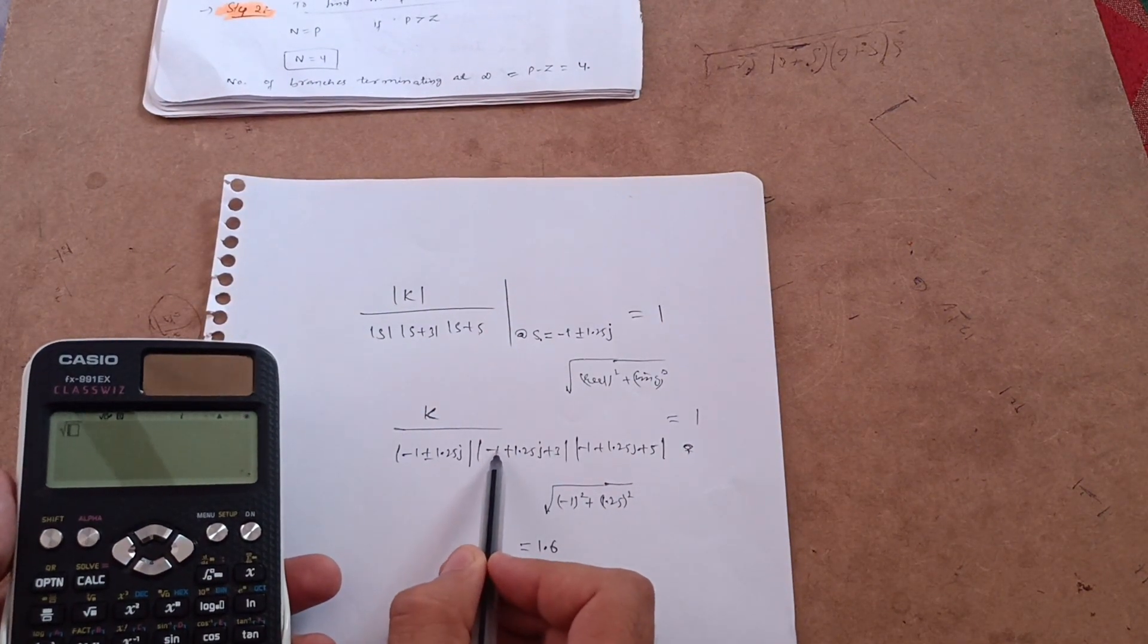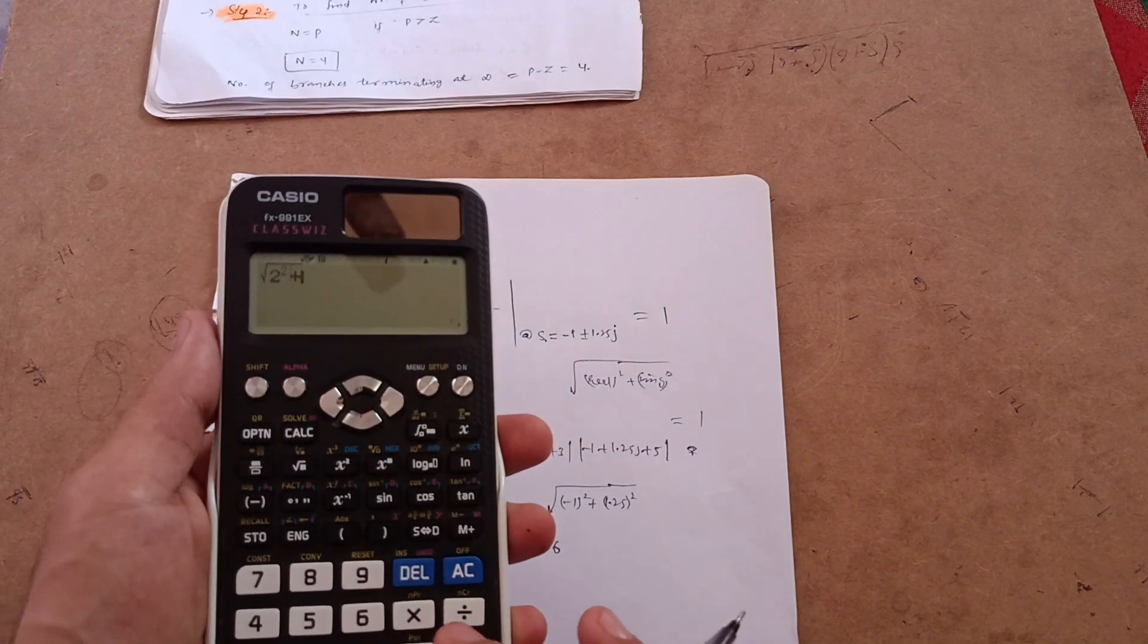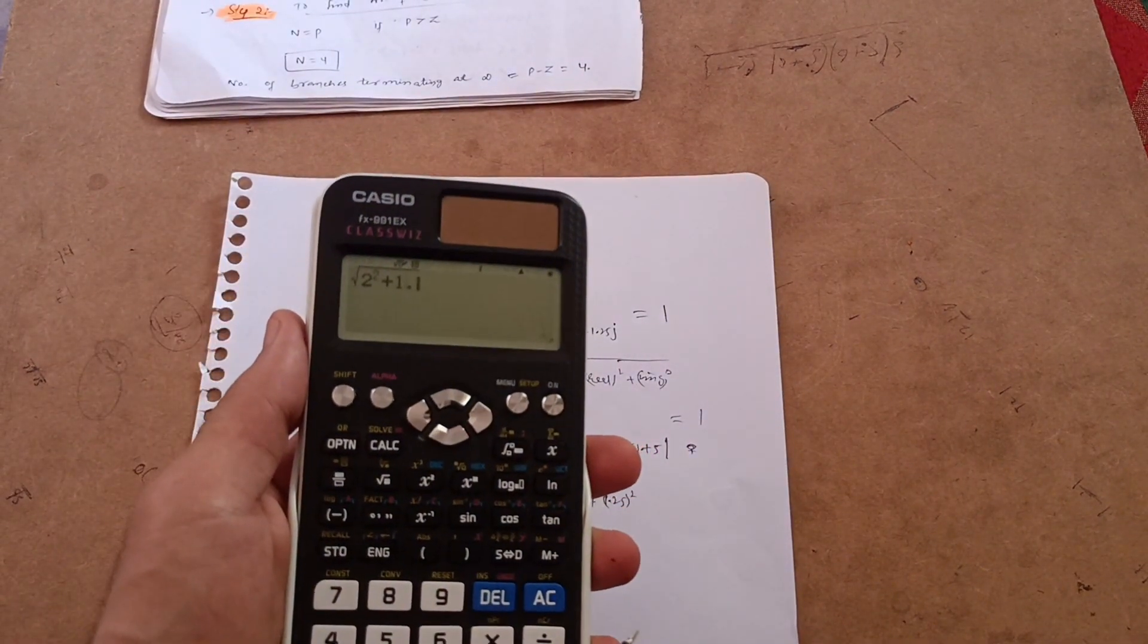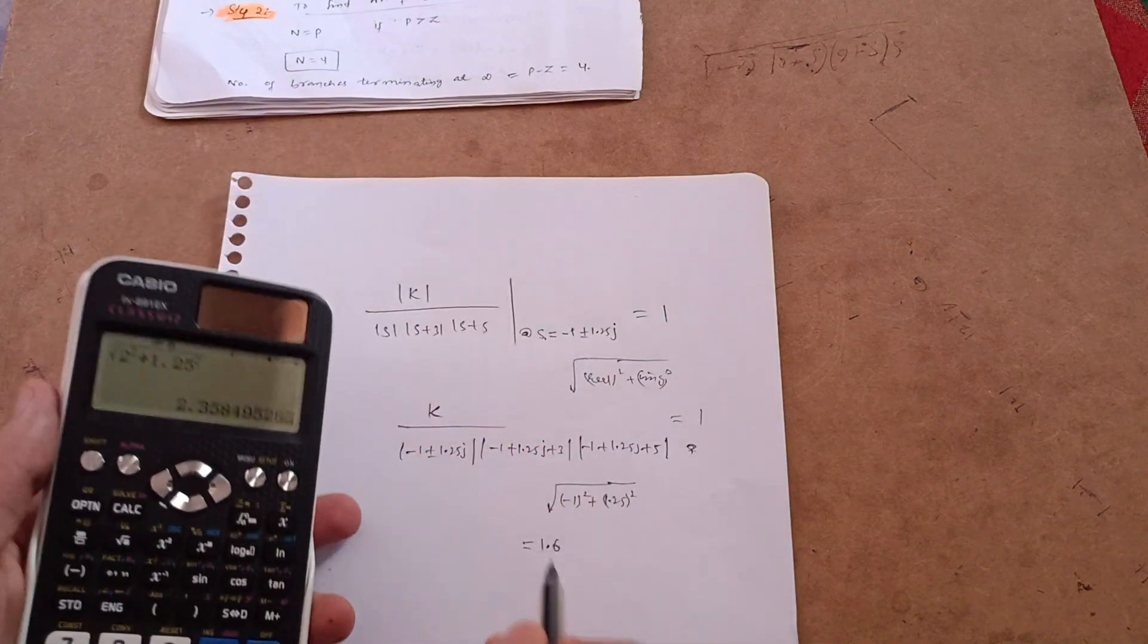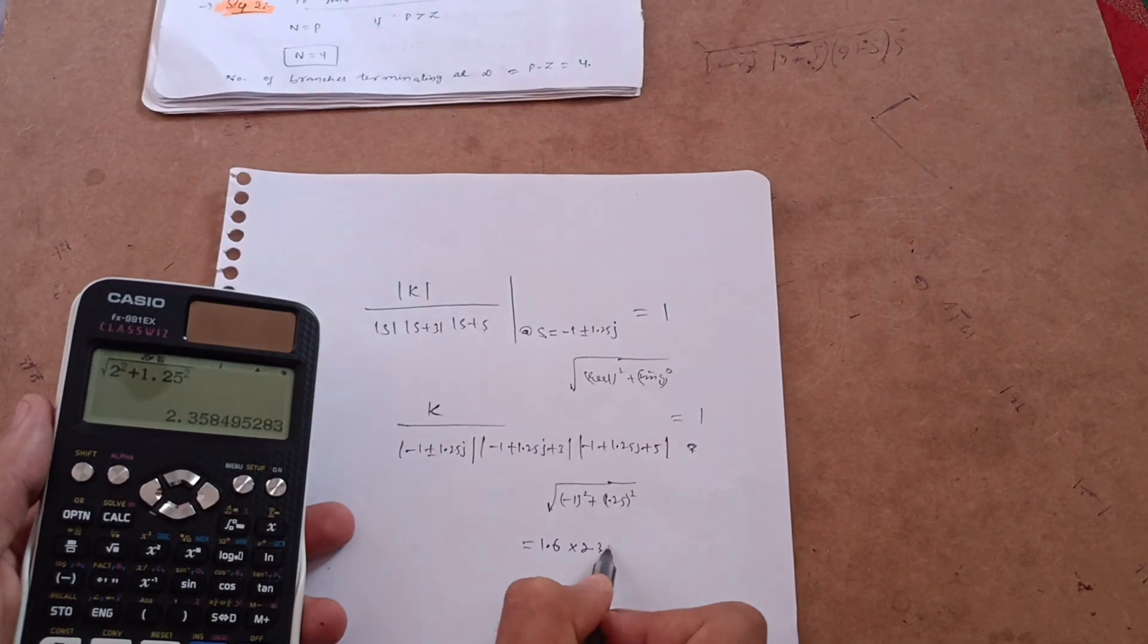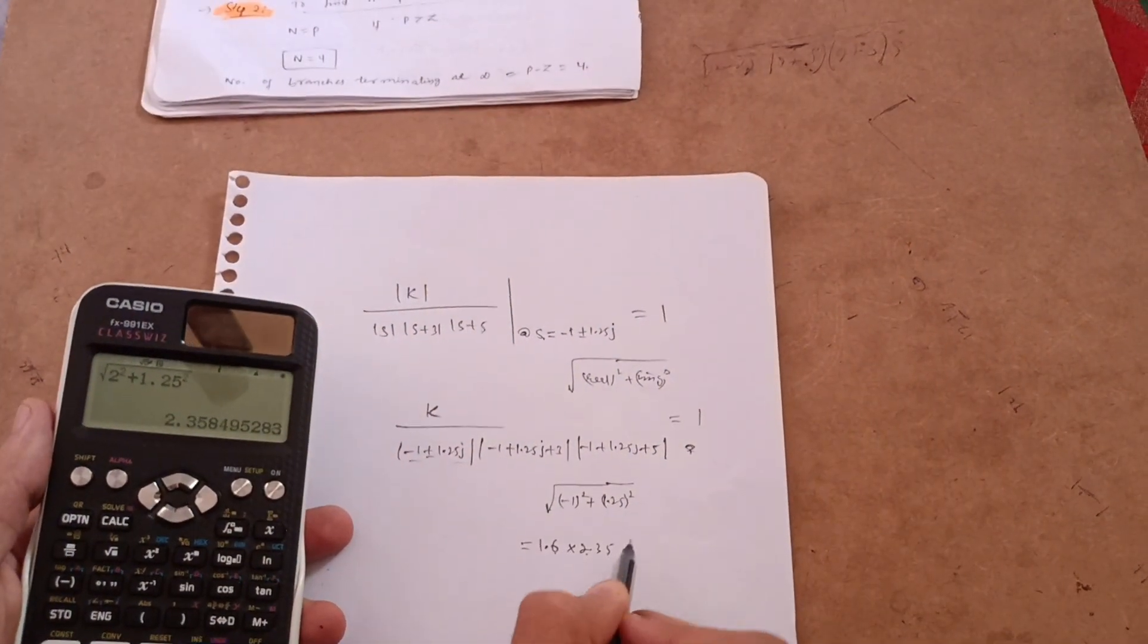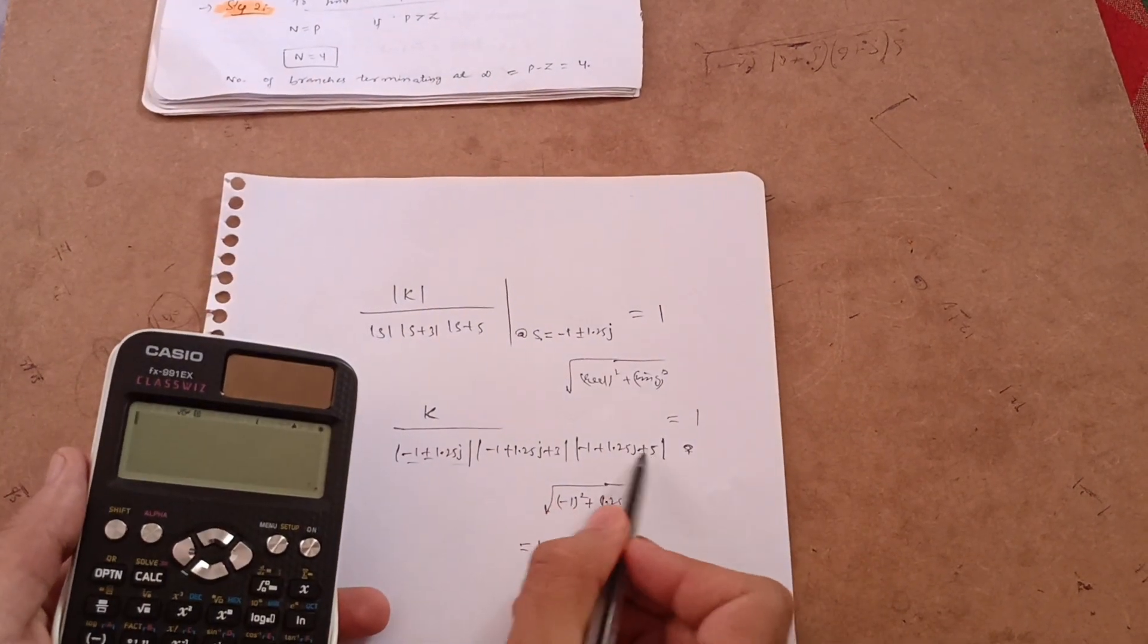2 is the real part, so 2 square, plus imaginary, imaginary means 1.25 whole square. So 1.25 whole square, you will get the value as 2.35. So into 2.35, these below terms. So this is 1.6, this is 2.35, into this magnitude, so you will take 5 minus 1 is 4.